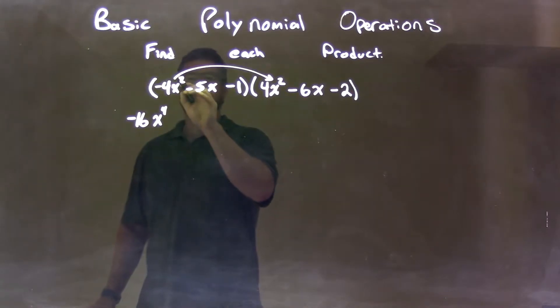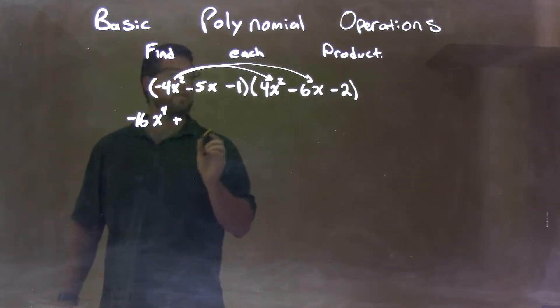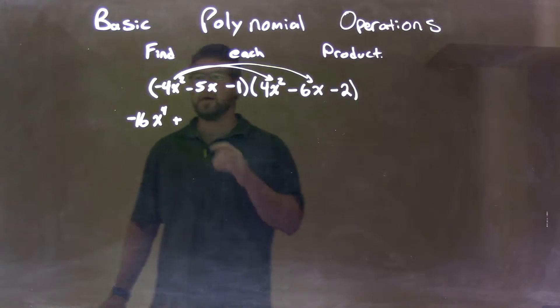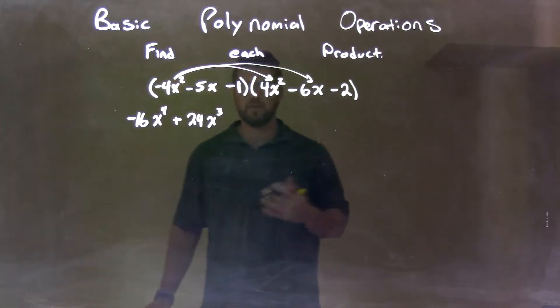Next one, multiply negative 4x squared by minus 6x. The negatives cancel, become positive, so we have a plus, and then 4 times 6 is 24. So we have 24x to the third power, x squared times x is x to the third. Then, we have minus 4x squared times minus 2, that's positive 8x squared.